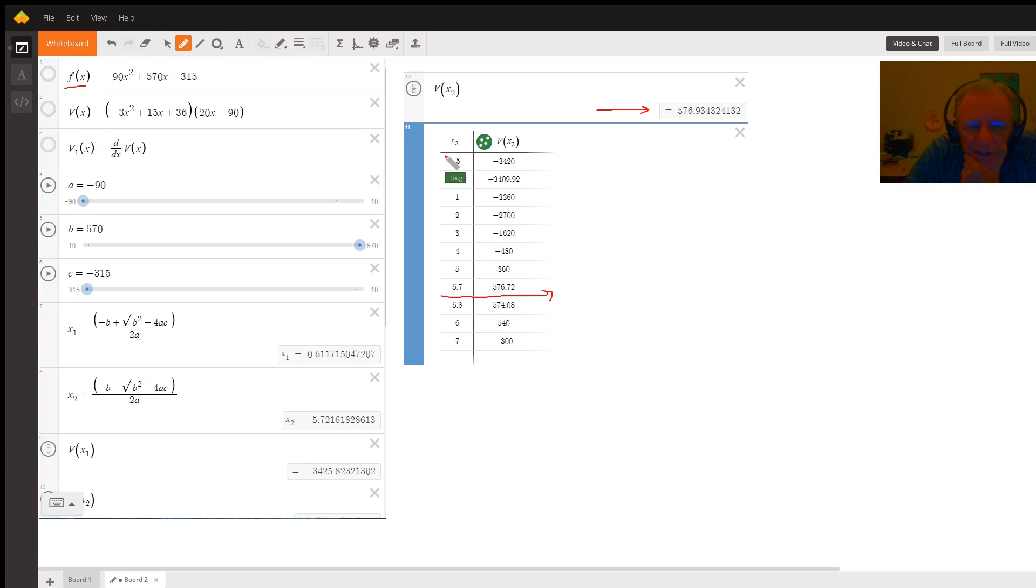We can see the function is starting to increase at 0.5 until we get to this critical number, 5.76, and then it starts to decrease again.